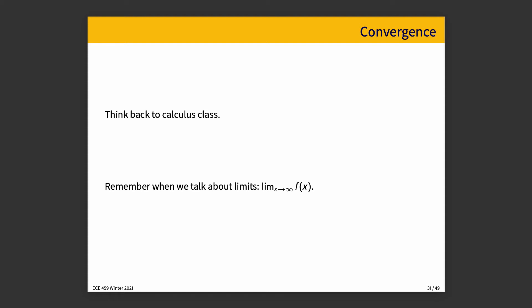With a bit of understanding of the probability stuff behind us, we can return to actually focusing on the queuing theory component. I want to talk about convergence.